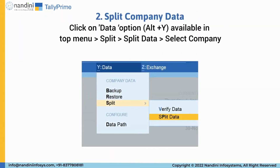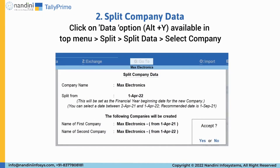Second is split company data. When you split the data, the original data is retained, and two new companies with unique names and dates are created. To split the company data, click on the Data option available in the top menu and click on Split, then Split Data, and click Select Company. The important thing is to verify the data before you proceed to split.